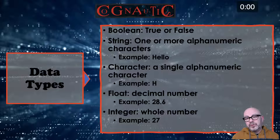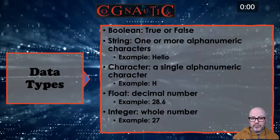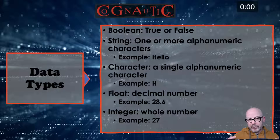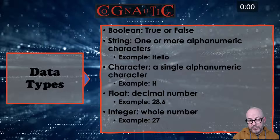Data types: data can be in different formats. You've got boolean which is true or false, yes or no, one or zero. You've got string, which is one or more alphanumeric characters — for example, 'hello'. You wouldn't normally do arithmetic on a string, but you can find the third or fourth letter. You've got character, which is a single alphanumeric character.